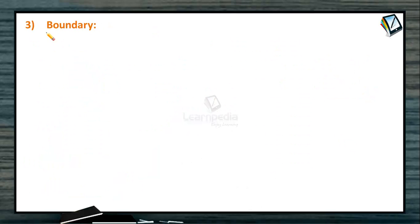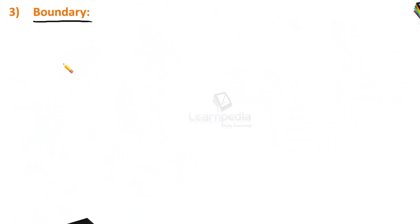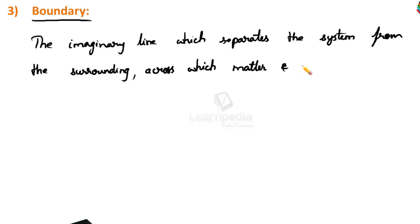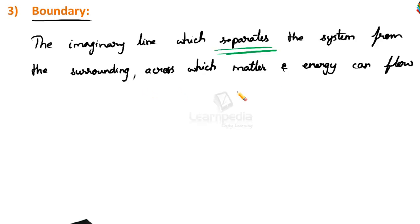The third term: boundary. What is boundary? The imaginary line which separates the system from the surroundings, across which matter as well as energy can flow in and out, is called the boundary. So the imaginary line which separates the system from the surroundings — through which matter or energy or both can flow in and out. Taking the same previous example, the walls of the test tube become the boundary.